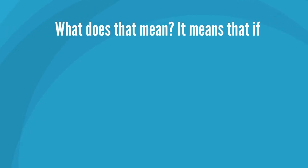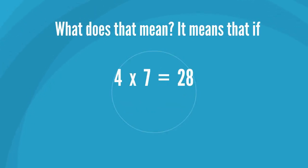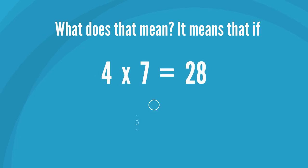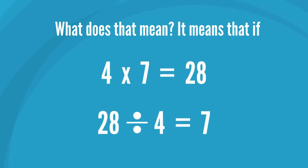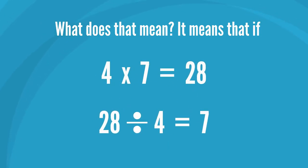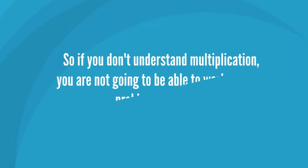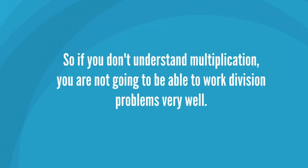What does that mean? It means that if 4 times 7 equals 28, then 28 divided by 4 equals 7. So if you don't understand multiplication, you are not going to be able to work division problems very well.